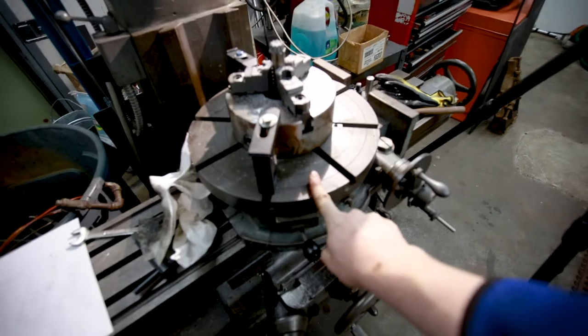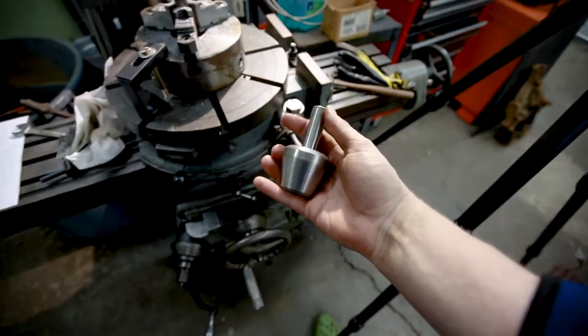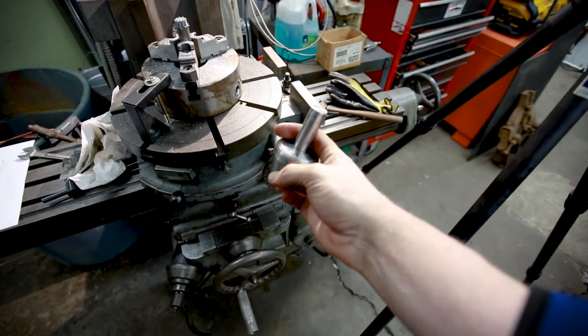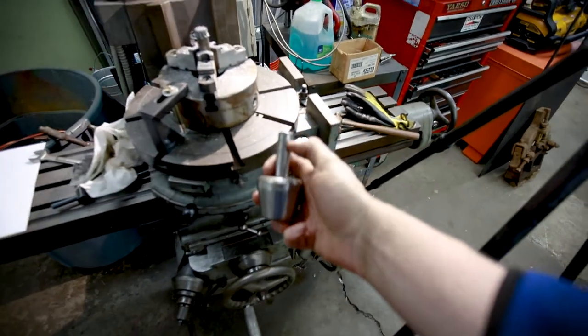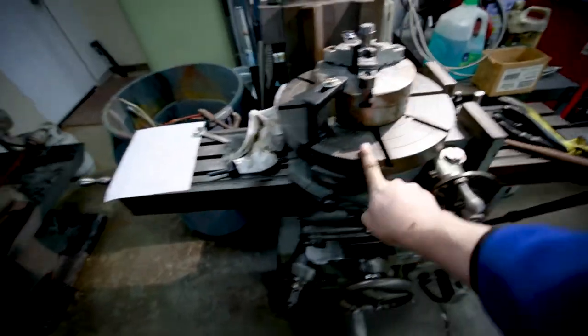Now I centered up this guy in the chuck here with the centering plug that same machinist made for me. It is just a two inch plug or whatever with a three quarter shank on it that goes up in my milling machine here. So yeah, it is really that simple. I'm going to take it out of the chuck here and give it a try.